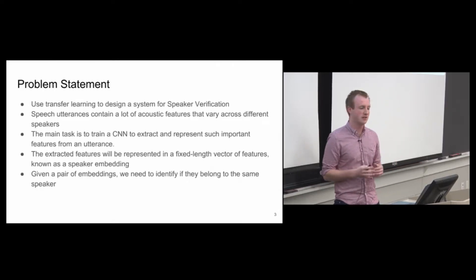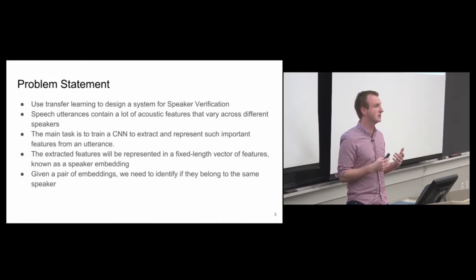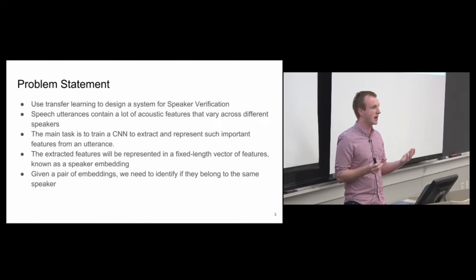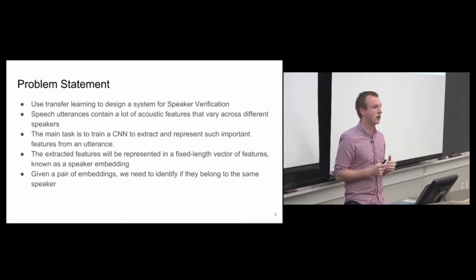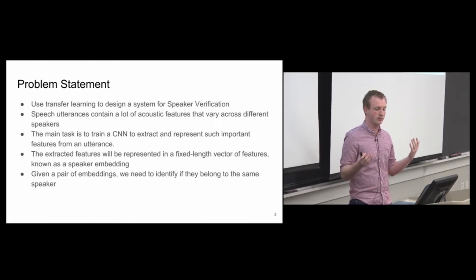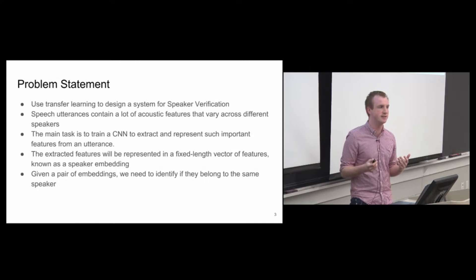So let's talk about the problem statement. What we're doing here is using transfer learning initially to design a system for speaker verification. I say transfer learning because the first task you're going to do is implement a network for M-way classification of speakers, but this is not necessarily the task at hand. What we're really trying to do is train a convolutional neural network to extract and learn features that are useful for speech verification, which is distinct from identification. Given two embeddings learned from two different utterances, we need to come up with some kind of similarity metric, usually based on the distance between the two vectors given some distance function.